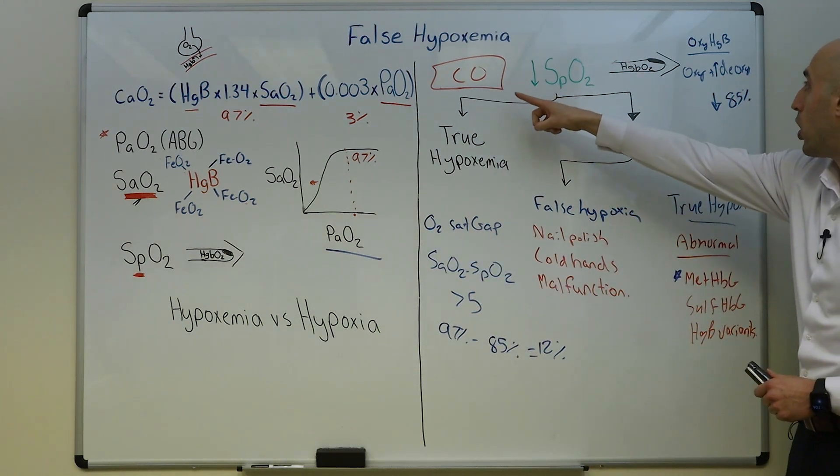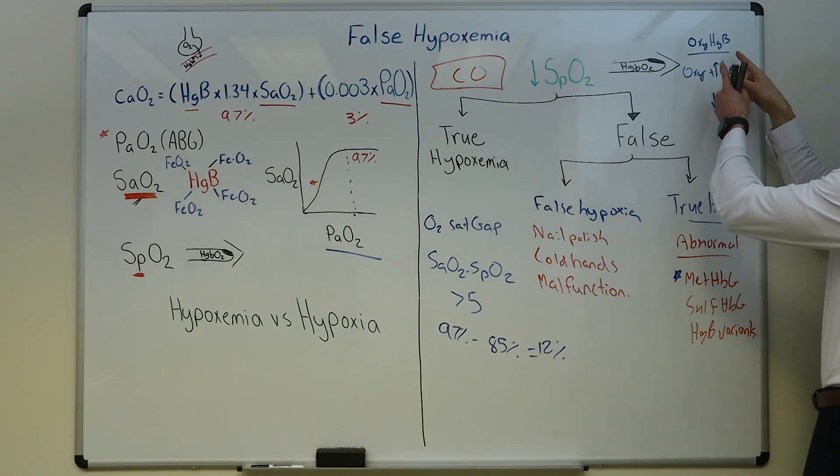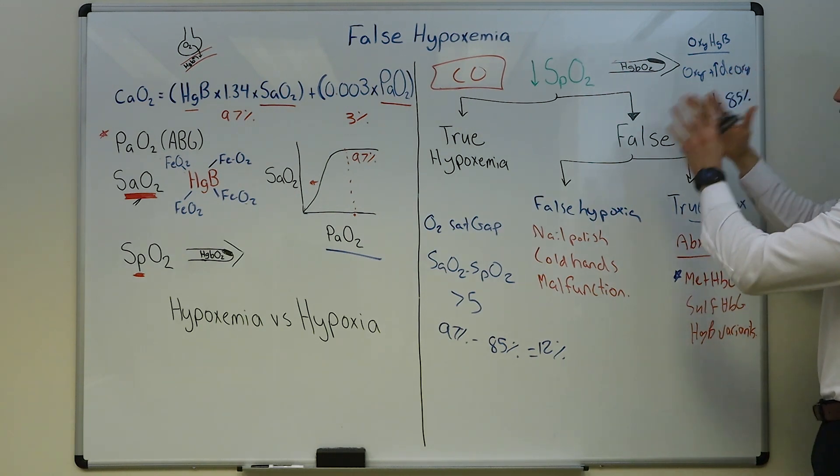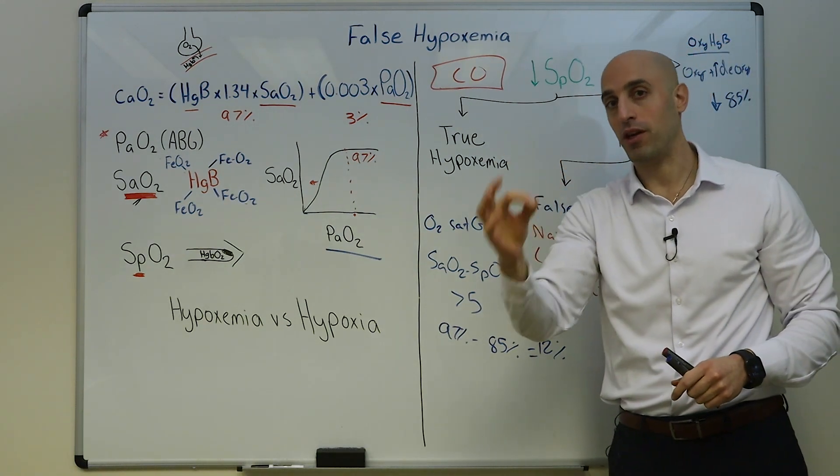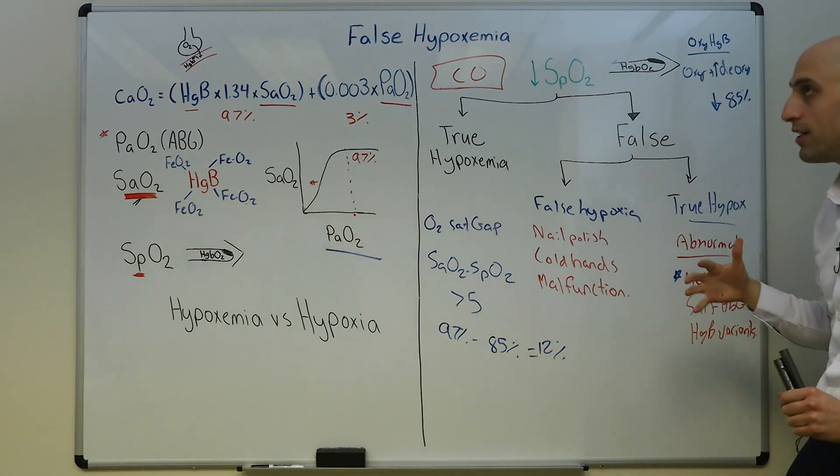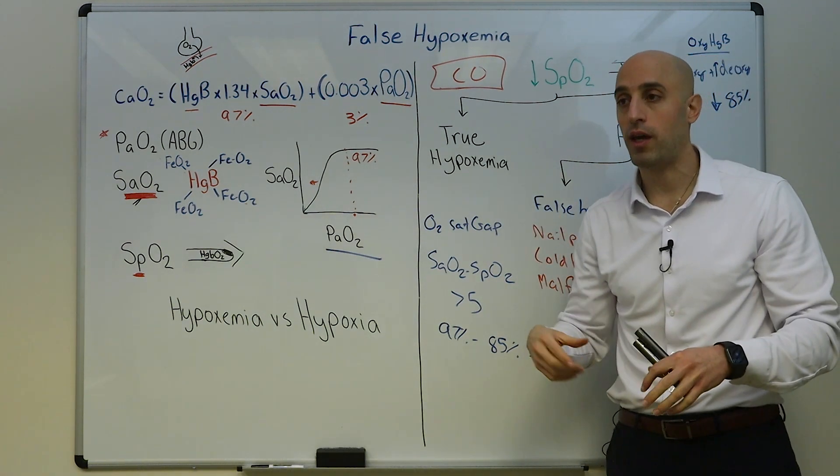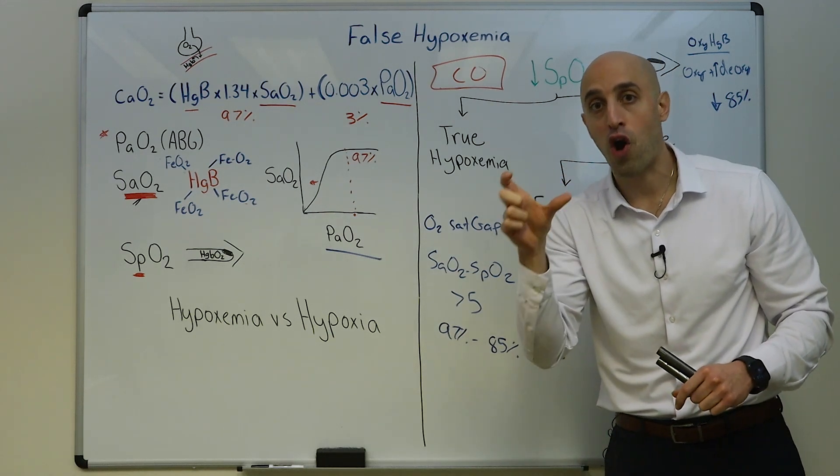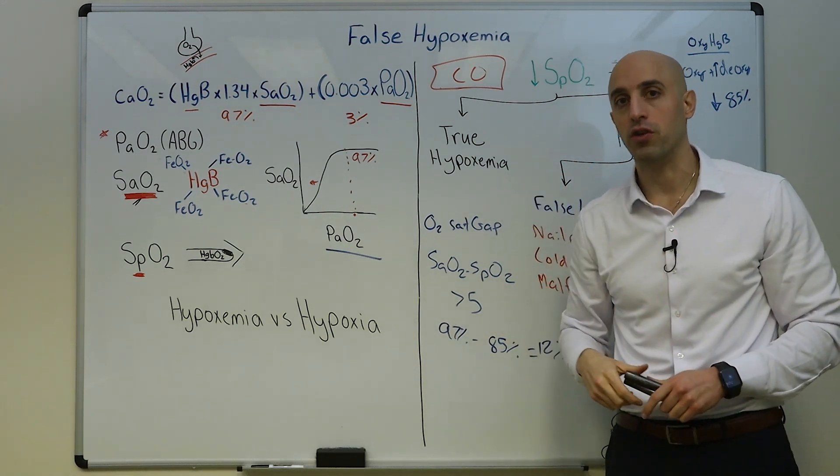Carbon monoxide acts as oxyhemoglobin, so it does not give you a low SpO2. Ultimately, if you have concern for these conditions, carboxyhemoglobin or methemoglobinemia, send a co-oxymetry with arterial blood gas.